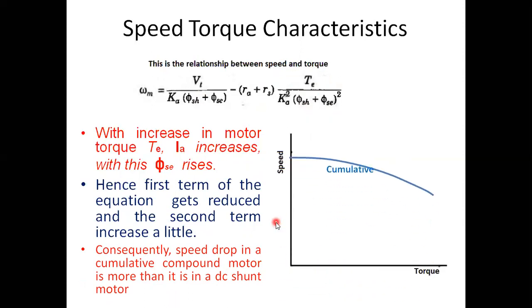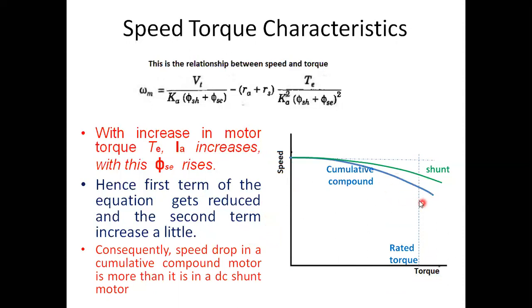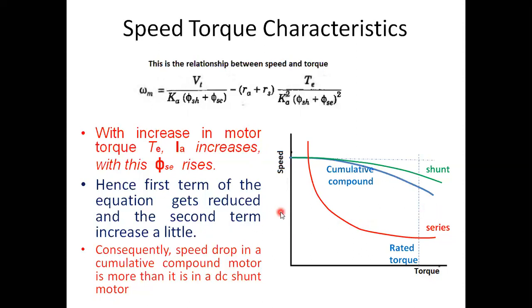Looking at the speed-torque characteristics, the cumulative compound motor curve shows a greater speed drop with increasing torque compared to the shunt motor. The rated torque is marked. The shunt motor and series motor speed-torque curves are also plotted for comparison, giving an overview of the speed-torque relationship of different DC motors. Thank you.